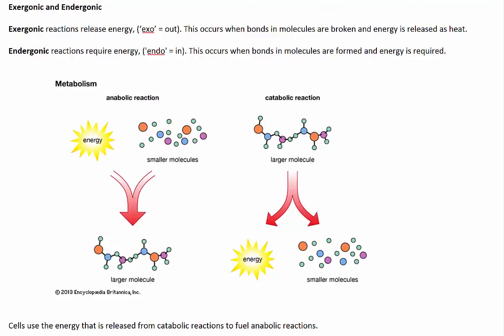Biochemical processes can also be categorised by whether they release energy or require energy. Exergonic reactions are those that release energy. Exo stands for out, so energy is being released out of these reactions, and this occurs when bonds in molecules are broken and energy is released as heat. For example, in cellular respiration, glucose is broken down into simpler molecules, and when the bonds in the glucose are broken, they release energy.